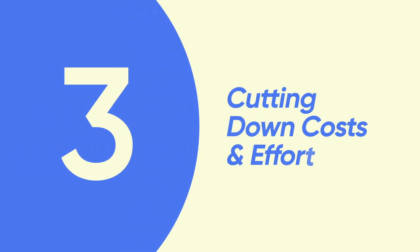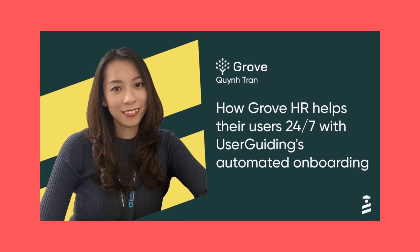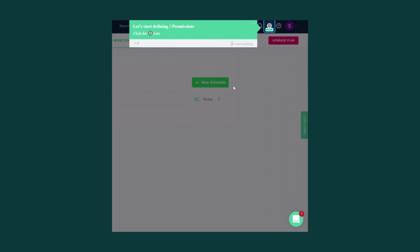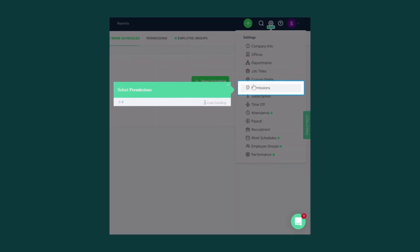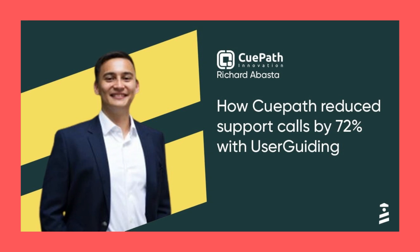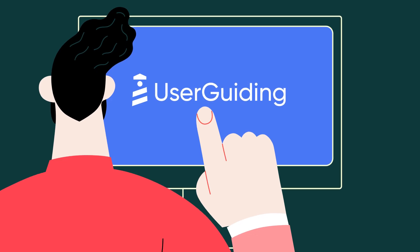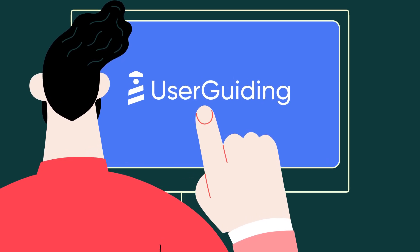Three, cutting down costs and effort. A well-crafted in-app tutorial can save you a fortune in user education and support costs. GrowHR, for example, now offers 24/7 help through resource centers. And then there's QPath, who reduced their support tickets by a whopping 72%, significantly lowering their support costs and effort. These products all achieved these numbers using UserGuiding, so you might want to check out the free trial in the description.